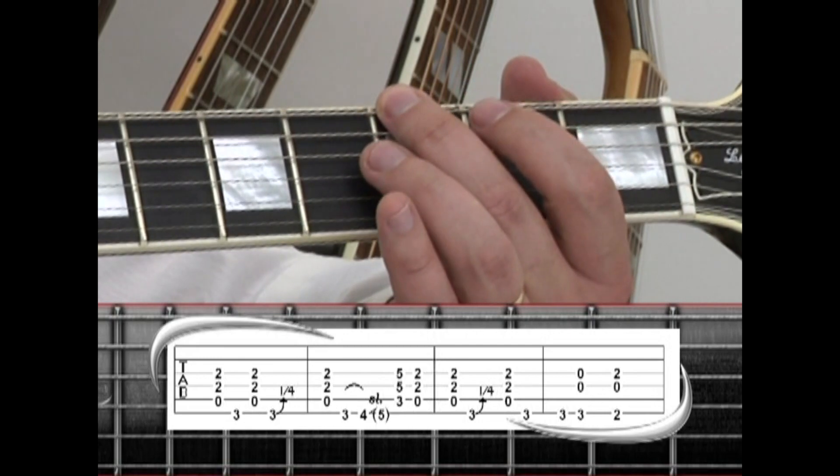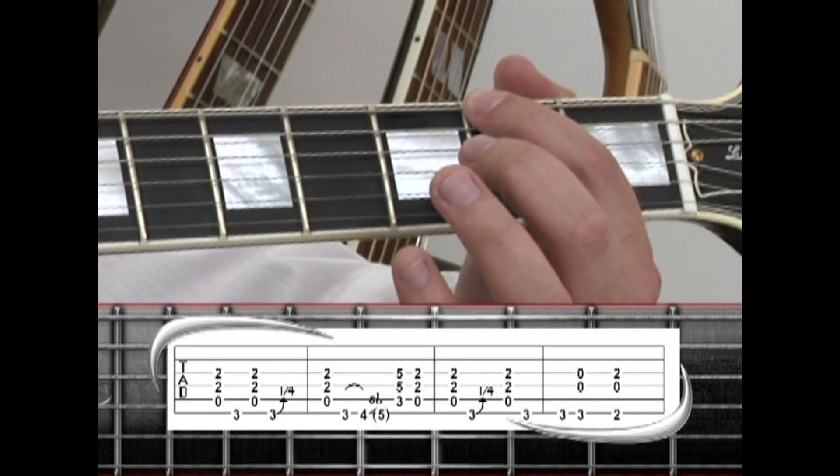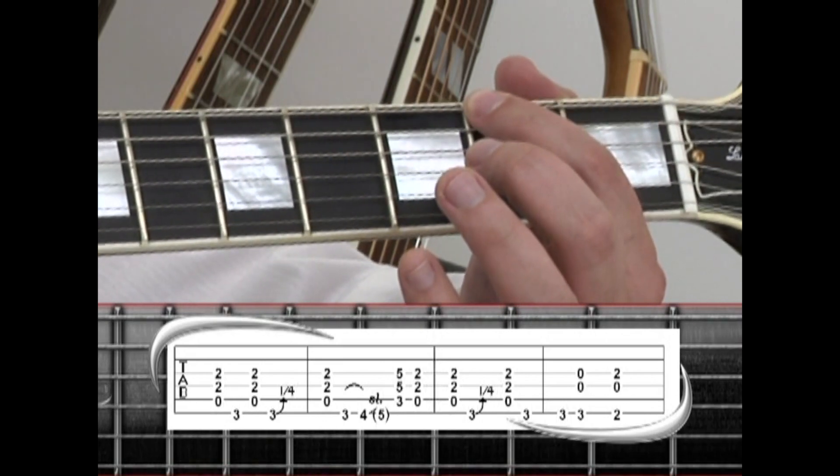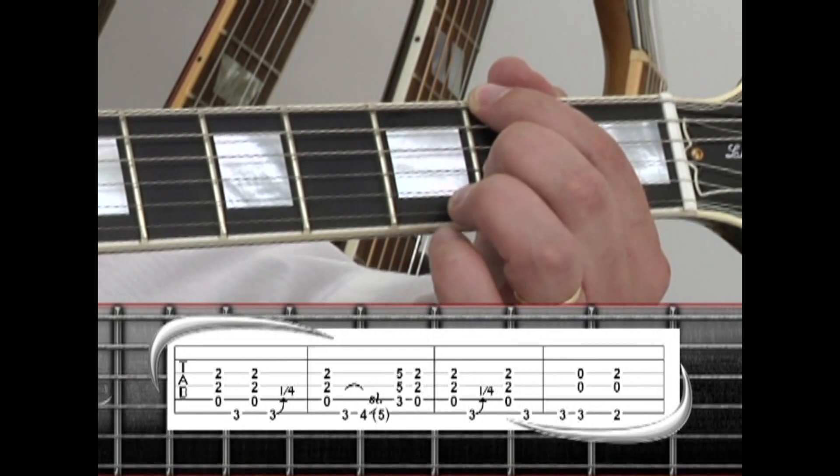Next, switch to an inverted D chord, 6-string 2nd fret with the index. This also mutes the 5th string. The 4th string is open and the 3rd string 2nd fret is held with the middle finger.